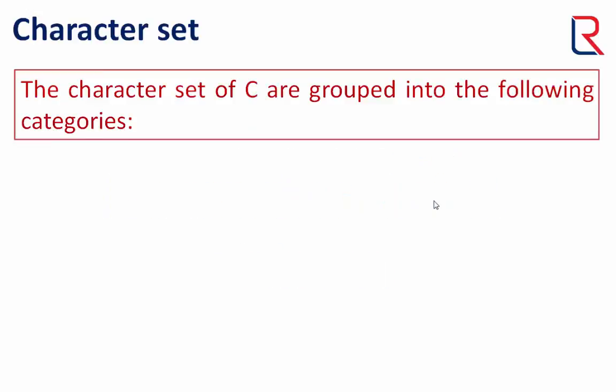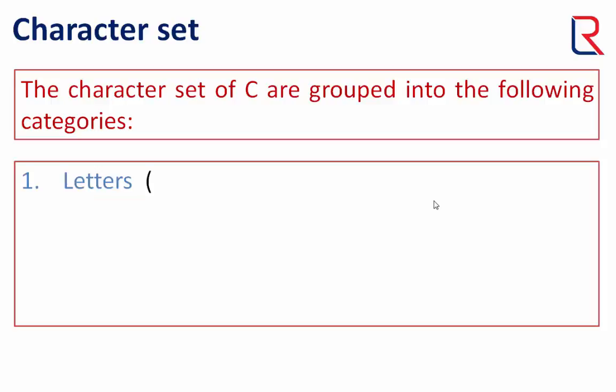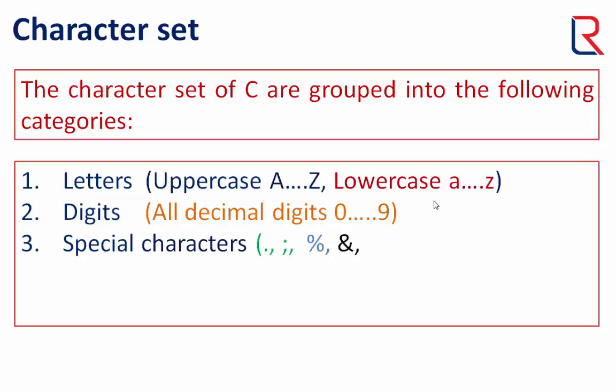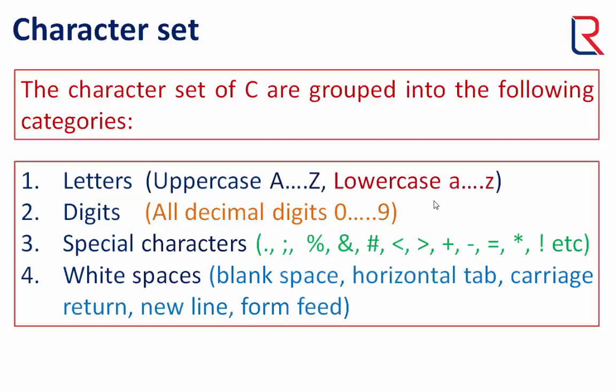The character set of C is grouped into the following categories: letters, digits, special characters, and white spaces.